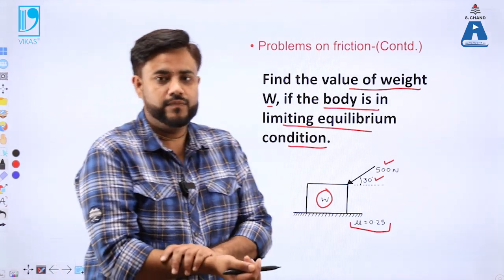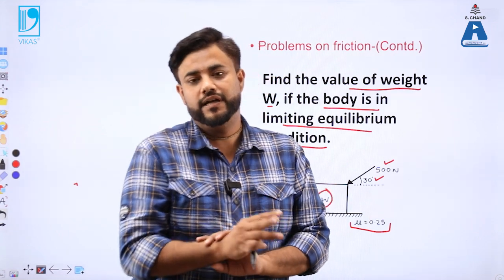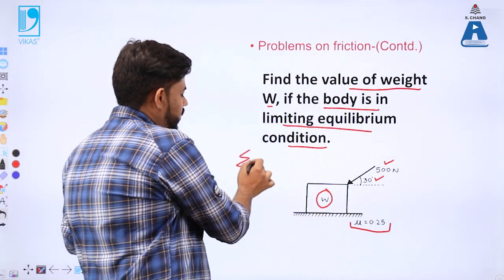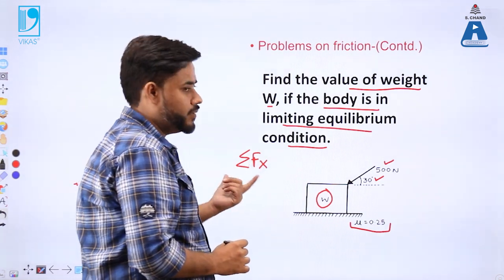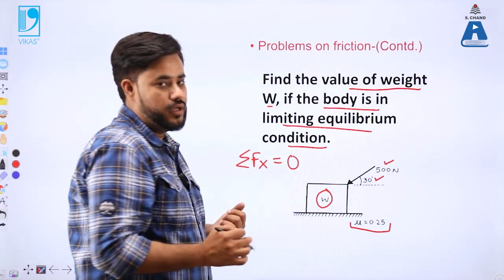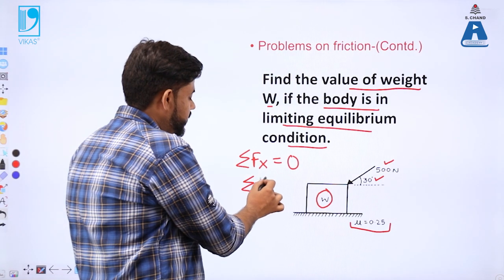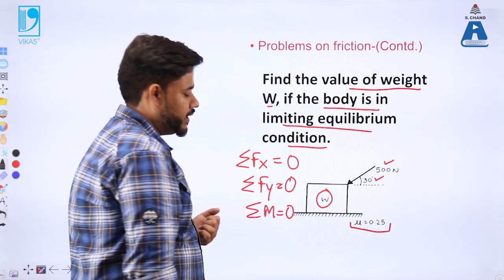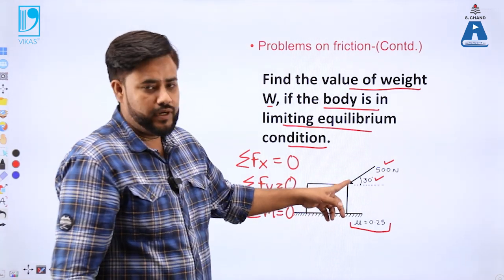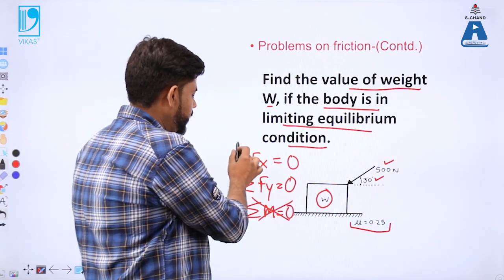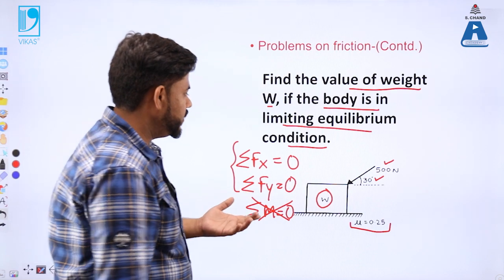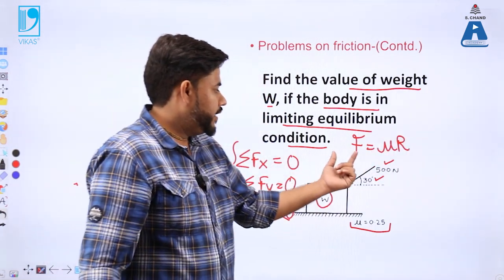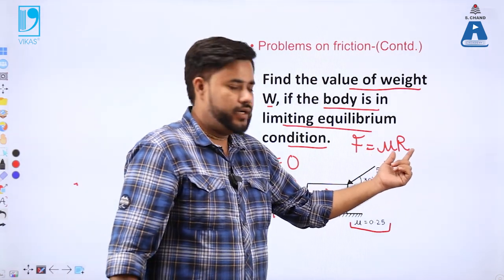The concept behind this type of problem lies under three equilibrium conditions. First: the sum of all forces in the x-direction equals zero. Second: the sum of all forces in the y-direction equals zero. Third: the sum of all moments about a point equals zero. In this situation there is no rotation, so we only use the first two. You also know the formula F equals mu multiplied by R, where F is the frictional force, mu is the coefficient of friction, and R is the normal reaction of the surface.